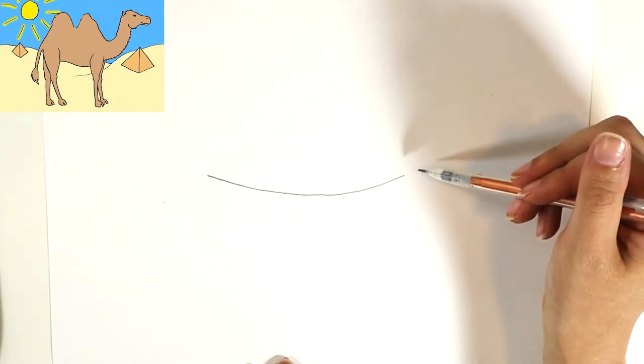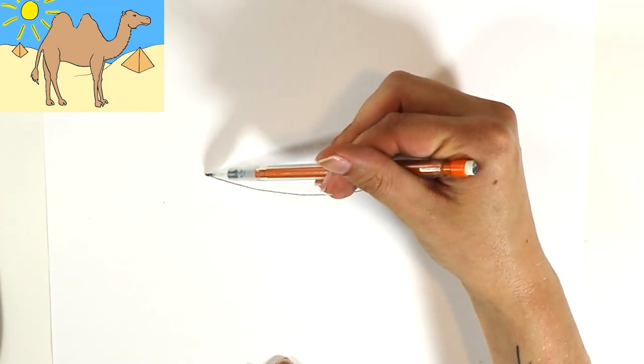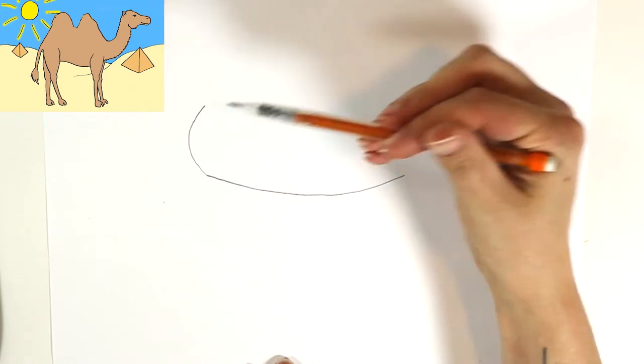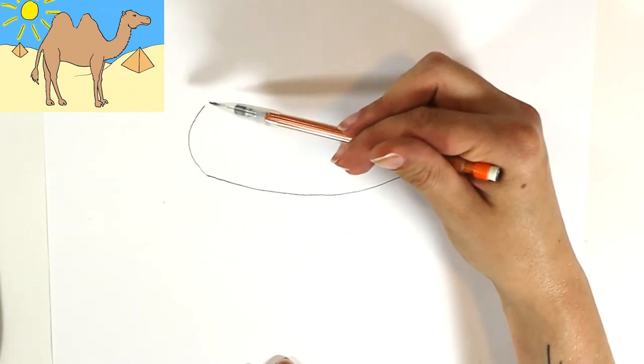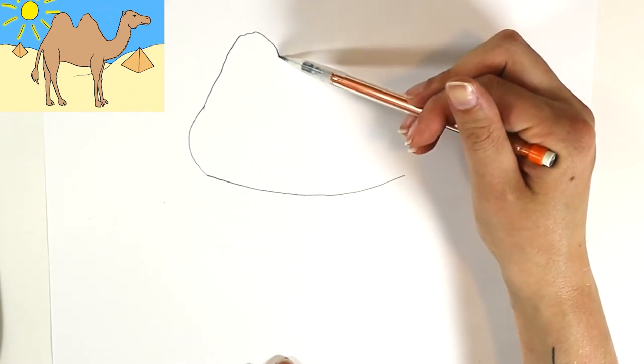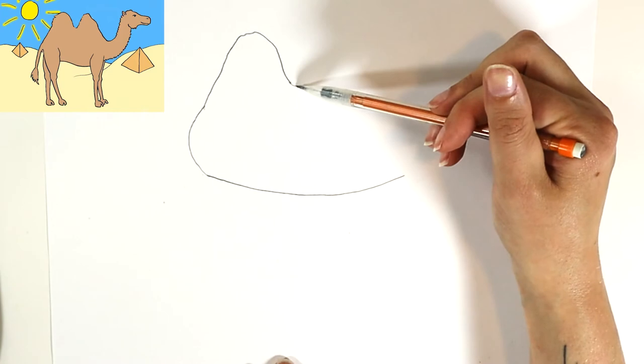I'm gonna put the head on this side, so I'll leave a space on the back here. I'm gonna create a little curve and then I'm gonna do two humps on my camel, so I'm gonna go up and kind of do like a wiggly hump.